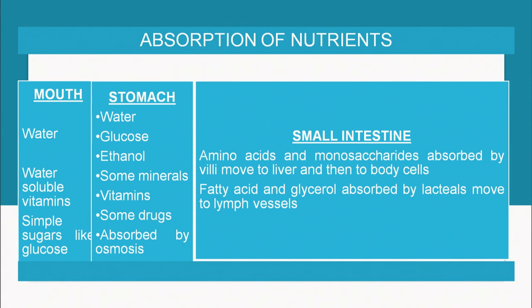In the small intestine, maximum absorption takes place, which is why the small intestine is a very long structure in our body. Amino acids and monosaccharides are absorbed by small finger-like projections on the wall of the intestine known as villi. From the villi, which are richly supplied with fine capillaries, the absorbed food is taken to the liver as well as to different parts of the body. Fatty acids and glycerol are absorbed by lacteals and moved to the lymph vessels.